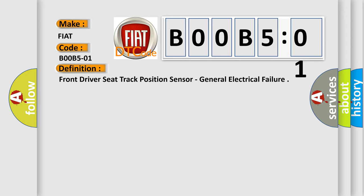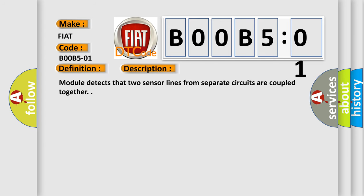And now this is a short description of this DTC code. Module detects that two sensor lines from separate circuits are coupled together.